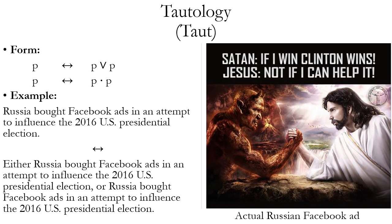Tautology is a rule that lets you move from a simple proposition P, or really any proposition P, to a disjunction of P as the first disjunct and P again as the second disjunct. Now, if you move from P to P wedge P, you could also do that using the addition rule. However, tautology allows you to go in the other direction — it allows you to eliminate one of the disjuncts, but only if the disjuncts are identical. So P wedge P can also be converted to just P.